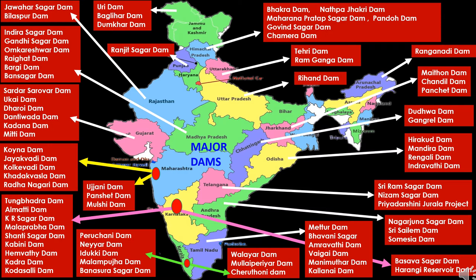In Chhattisgarh, first is Dudhwa Dam, built on the Mahanadi River in Dhamtari district. Second is Gangrel Dam, also built on the Mahanadi River in Dhamtari district. In Odisha, first is Hirakud Dam, constructed on the Mahanadi River in Sambalpur — Hirakud Dam is India's largest dam. Next is Andra Dam, built on the Shankh River in Sundargarh district. Next is Rengali Dam, constructed on the Brahmani River in Angul district. Next is Indravati Dam, built on the Indravati River in Bhawanipatna — the Indravati River is a tributary of Godavari.